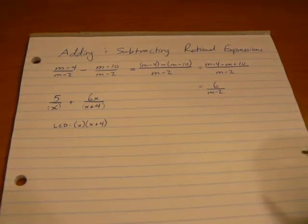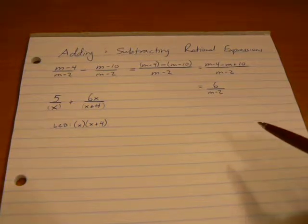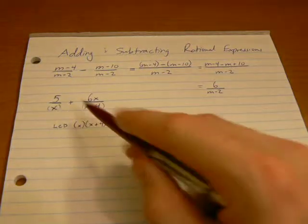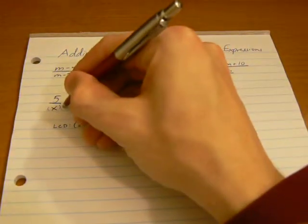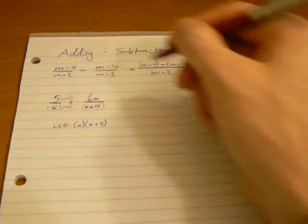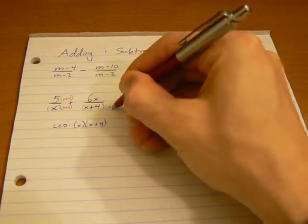Once I've identified what those are, I know what I need to multiply each of our terms here by in order to get that common denominator. I've got x here, so I need to multiply this by x plus 4. And whatever I do to the bottom, I have to do to the top.